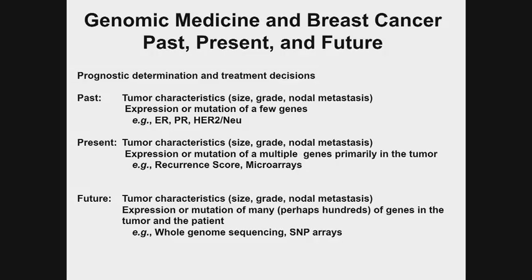In summary: the past was really looking at tumor characteristics and one or a few genes. Currently we are already practicing genomic medicine, looking at arrays of anywhere from 20 to 70 genes in breast cancer. The future really is going to be expression of hundreds of genes at a time, plus sequencing and SNP arrays, to decide what are the best drug choices for a given patient and a given tumor — who needs treatment and who doesn't.